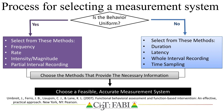Event-based measurement systems tend to be well aligned for measuring uniform behaviors and include gathering permanent products, frequency recording — where you count the number of times the behavior was observed in a session and convert to rate when possible — or rating the intensity or magnitude in which the behavior was performed. Time-based measurement systems tend to be well aligned for measuring non-uniform behaviors, such as duration or latency recording, interval recording, or time sampling.